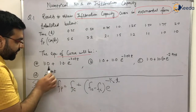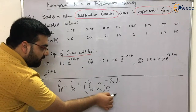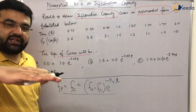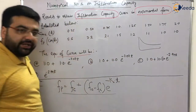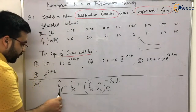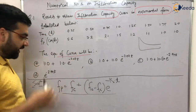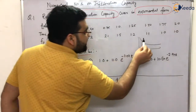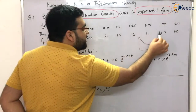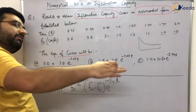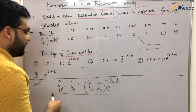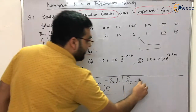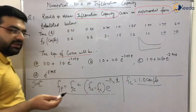From the options, the answer should be in the form 1.0 plus something. FC is the steady state capacity — after some time the infiltration capacity becomes constant. Looking at the table, FP is given for every time interval. F0 is not given. FC is constant, and after 1.5 hours the value is 1 and remains 1, so FC equals 1.0 cm/hr.